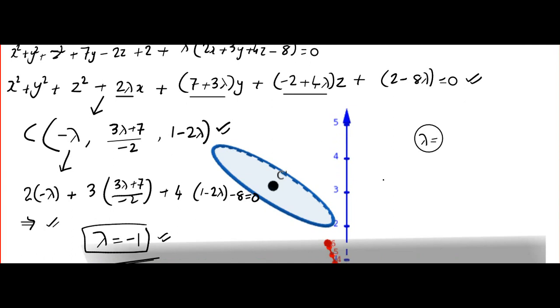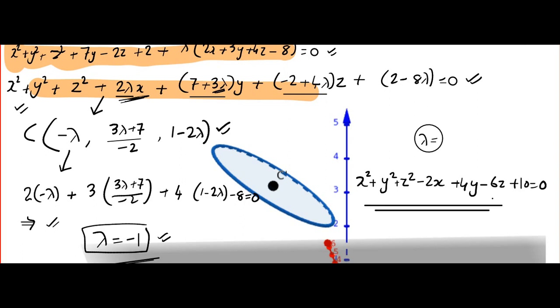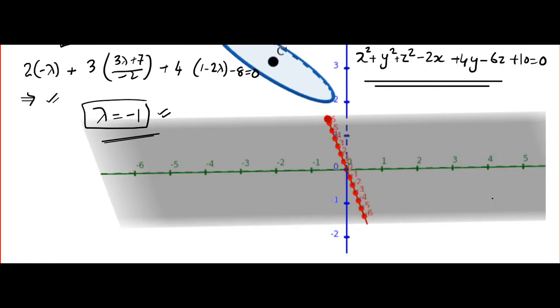I will write the required equation of the sphere is, now all you have to do is plug it here or here as you wish. I am going to plug it in the second one. Some people love the first one. Some people love to plug it in the second one. Both will give you the same answer. So, the required sphere is x square plus y square plus z square. Now, what is lambda value? Minus 1 minus 2x. What is lambda value? Minus 1. 7 minus 3 is 4y minus 6z plus 10 equal to 0. This is very important. They ask now and then.